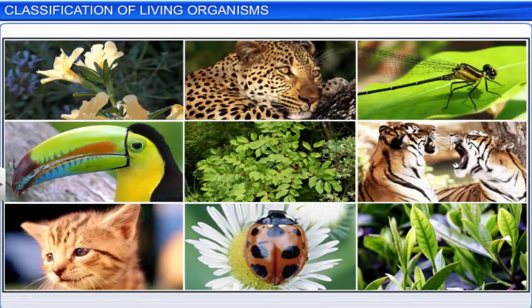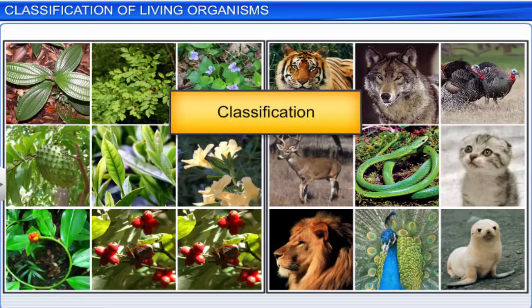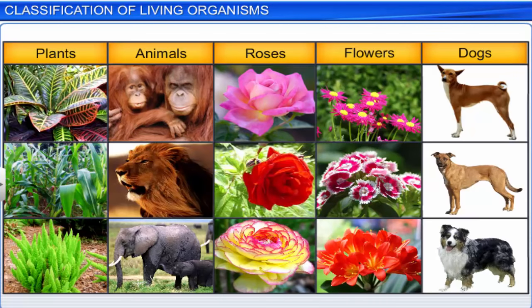Apart from assigning scientific names to living organisms, they must be aptly organized for easy study. The process of grouping anything into convenient categories, based on easily observable characters, is known as classification. For example, plants, animals, roses, flowers, and dogs are groups that we can easily recognize. Each group has specific characteristics, and are convenient categories that help us to study organisms.